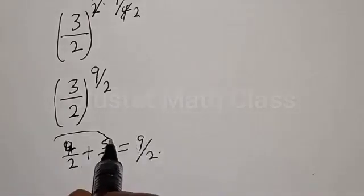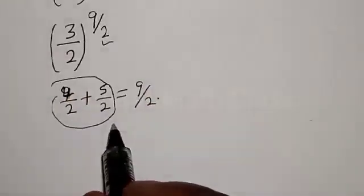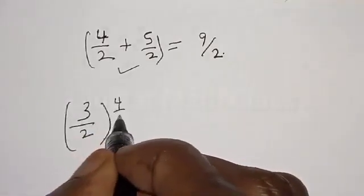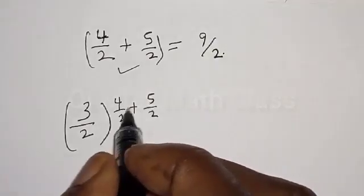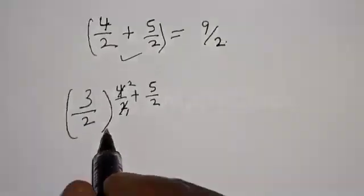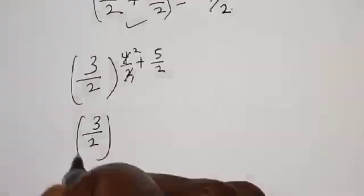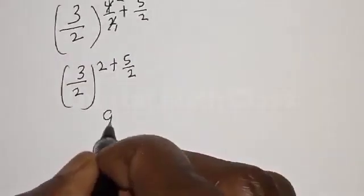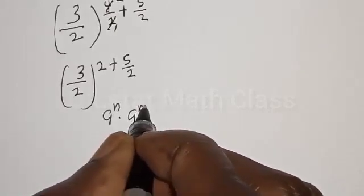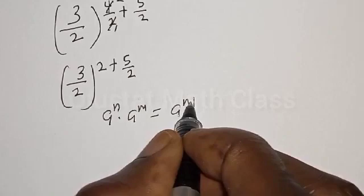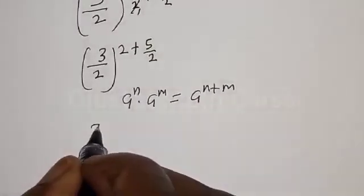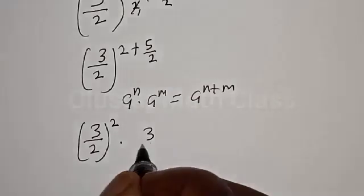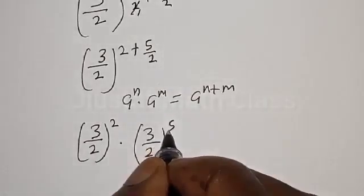Let's substitute this into the equation. We have (3 divided by 2) raised to the power of 4 over 2 plus 5 over 2. Remember, a raised to power n multiplied by a raised to power m is the same as a raised to power n plus m. Therefore our equation becomes (3 over 2) squared multiplied by (3 over 2) raised to the power of 5 divided by 2.